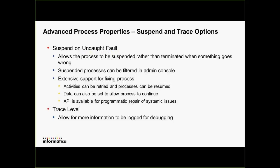The first one is an option for suspending on uncaught fault. Basically, there are a lot of times where you do not want to have processes just fail — you want to know why they are failing and potentially recover them so that the business process can continue smoothly. In the past, in web-developed processes, we didn't have an option to do this. Any time something went wrong — whether it was a program error or an external service that wasn't available — we would basically just terminate the process, what we internally call faulting the process.